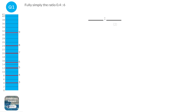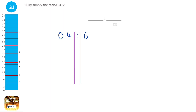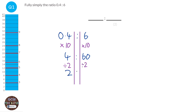Just like when you're simplifying fractions you can't have decimals at the top and bottom, you can't have decimals at the left and right of a ratio. So we're going to get rid of this decimal by multiplying each side by 10, which leaves 4 and 60. We can simplify further by dividing left and right by 2 to get 2 to 30, then by 2 again to get 1 to 15. You might have just divided by 4 — there are a couple of different methods to get the same answer.